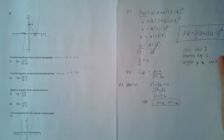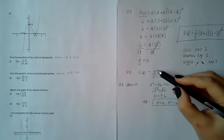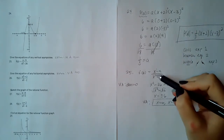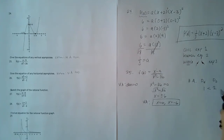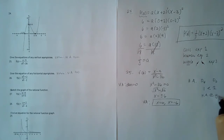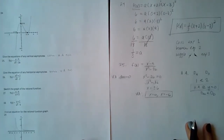For the horizontal asymptote, consider the degrees. The degree of the numerator is 1 and the degree of the denominator is 2. When the numerator's degree is smaller than the denominator's degree, you automatically have a horizontal asymptote at y = 0. Make sure you put that on your note sheet.